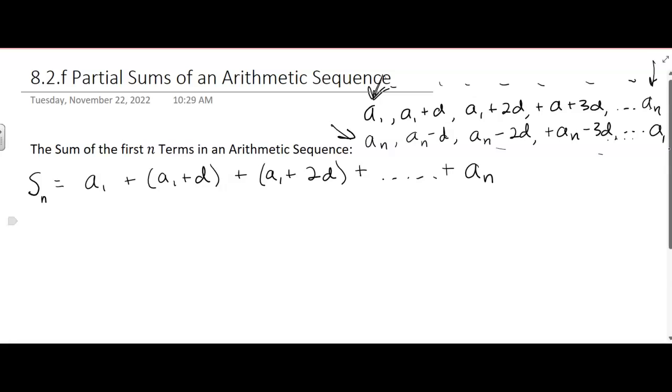So you could also say the sum of n terms, looking at the reverse order, is a sub n plus (a sub n minus d) plus (a sub n minus 2d) plus ... until you get to the last term, a sub 1. You might have to rewind the video and watch that a little bit.